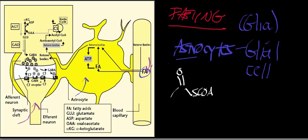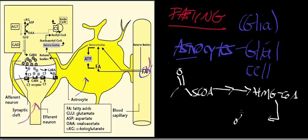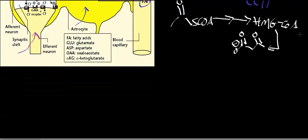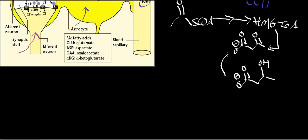What the astrocytes can do is convert the acetyl-CoA through a series of steps. Another thiolase converts it to acetoacetyl-CoA, then HMG-CoA synthase gives you HMG-CoA. Then HMG-CoA lyase gives you acetoacetate — one of our ketone bodies. We also have beta-hydroxybutyrate, and these are in equilibrium with each other. The main ketone body we use for fuel is acetoacetate.